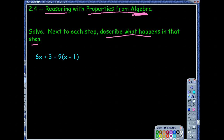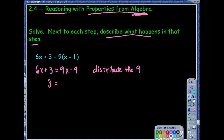I would distribute the 9. So 6x plus 3 equals 9x minus 9. Off to the side, I'm going to put 'distribute the 9.' And then I would get all of the variables to one side — I would move the 6x to the other side, so subtract 6x from both sides. So we're going to have 3 equals 3x minus 9. You said subtract 6x on both sides.